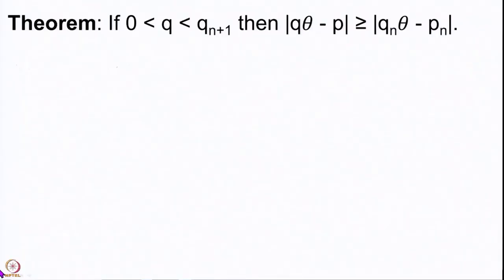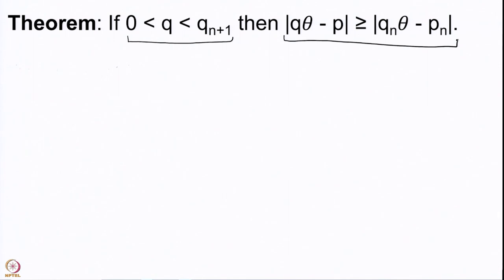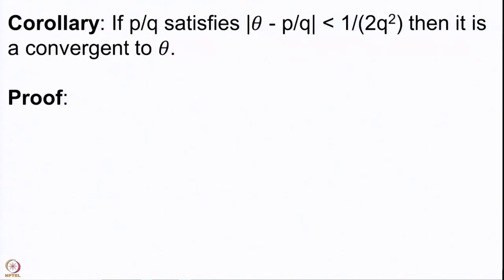Recall the theorem proved in our last lecture: if q is between 0 and q_{n+1}, a positive quantity, then for any integer p, |q·θ − p| is always greater than or equal to |q_n·θ − p_n|. We are going to use this result to prove that if any rational number p/q satisfies |θ − p/q| < 1/(2q²), then p/q must be a convergent to θ.